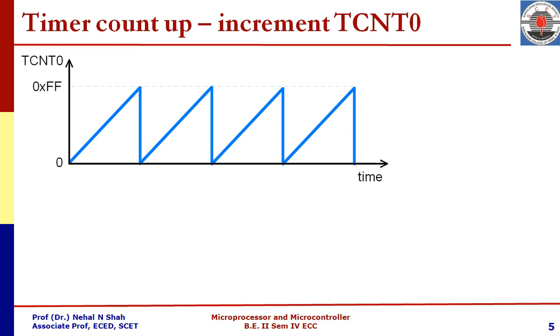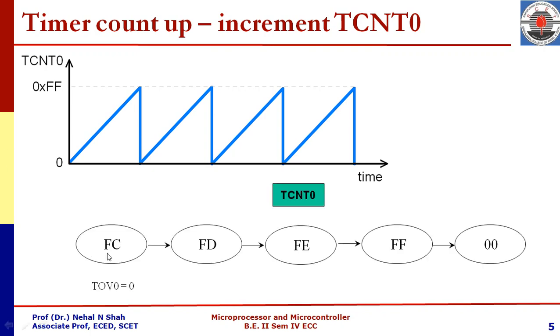Suppose if we consider that count is loaded with other value than zero. For example, let us assume that count is loaded with FC hex. In that case it will count from FC to FD, FE, and FF. Once it reaches FF, it rolls over to 00. You can observe initially when the count is started from FC, at that time timer overflow flag is zero. But the moment counter rolls over, timer overflow flag will become one.